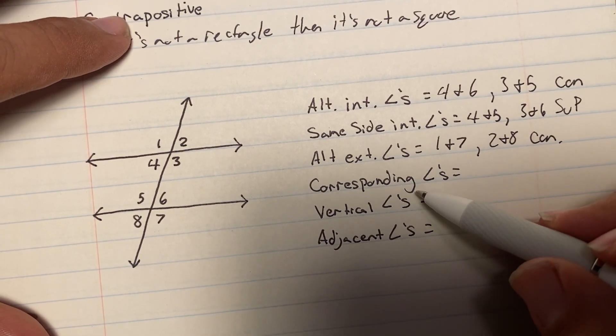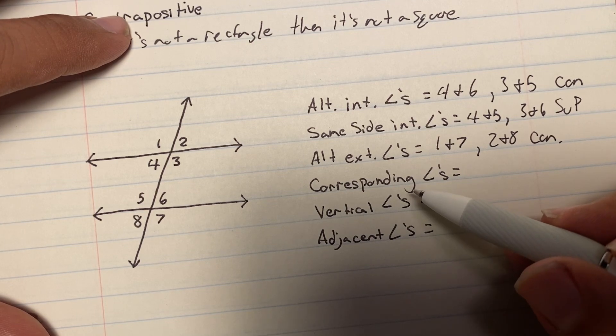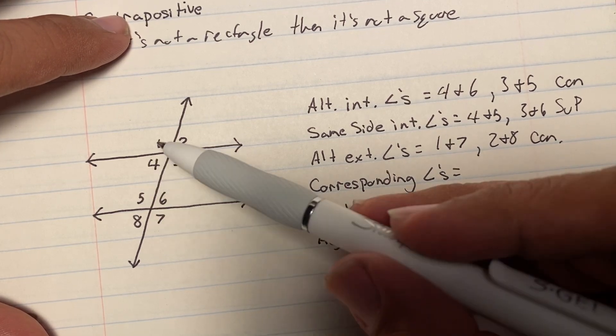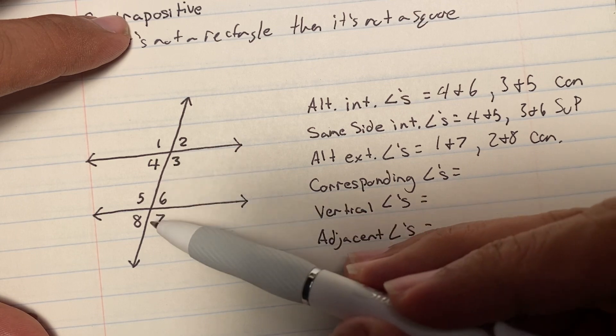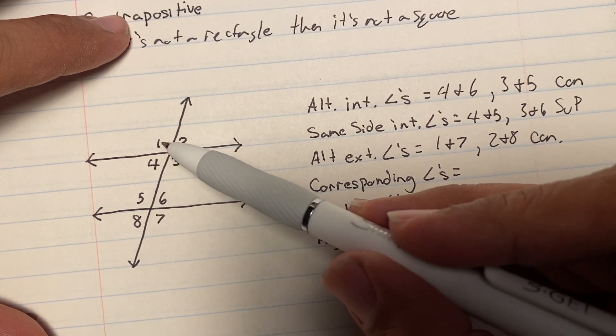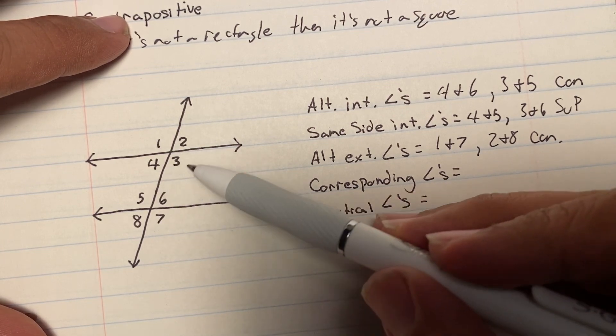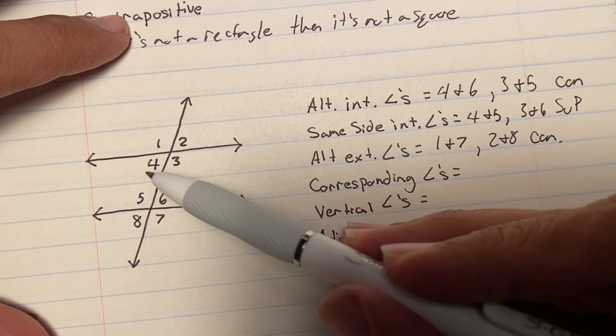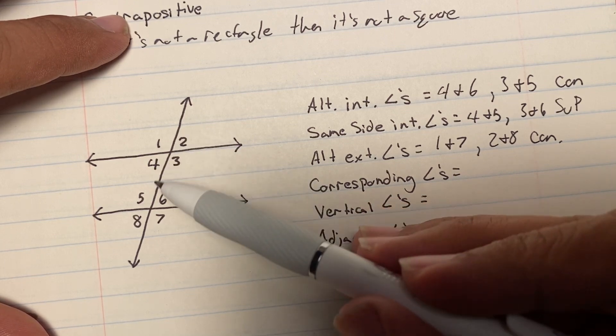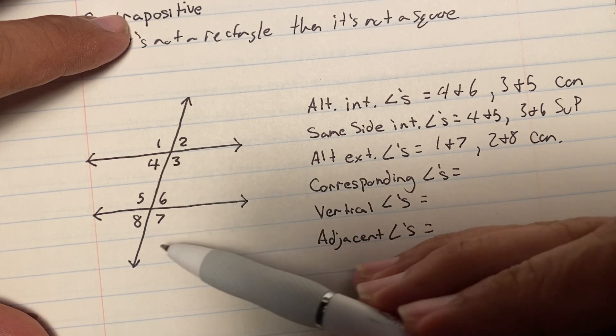The next one, corresponding angles. Now, corresponding angles mean that they're in the same place at the top that they are on the bottom. So, 1 is in the top left of these 4 pieces. So, top left, top left of these 4.